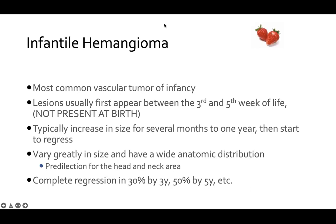Moving on to infantile hemangiomas — the most common vascular tumor of infancy. Lesions usually first appear between the third and fifth week of life and are not present at birth. They increase in size for several months to one year and then begin to regress. They vary greatly in size with wide anatomic distribution and have a predilection for the head and neck. We can expect complete regression by three years in about 30%, and 50% by five years, though not all lesions will regress.